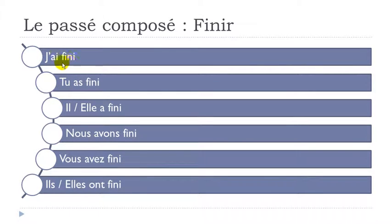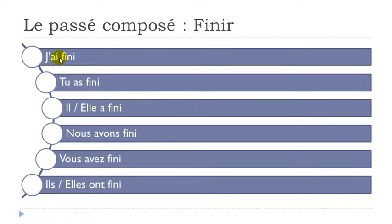Okay, so let's see them one more time. Remember, as we saw previously, you've got avoir here and then you've got fini — this participe passé form, the second form that you get to add to construct the passé composé. And fini doesn't change — it's here all the time and it's written the same way.